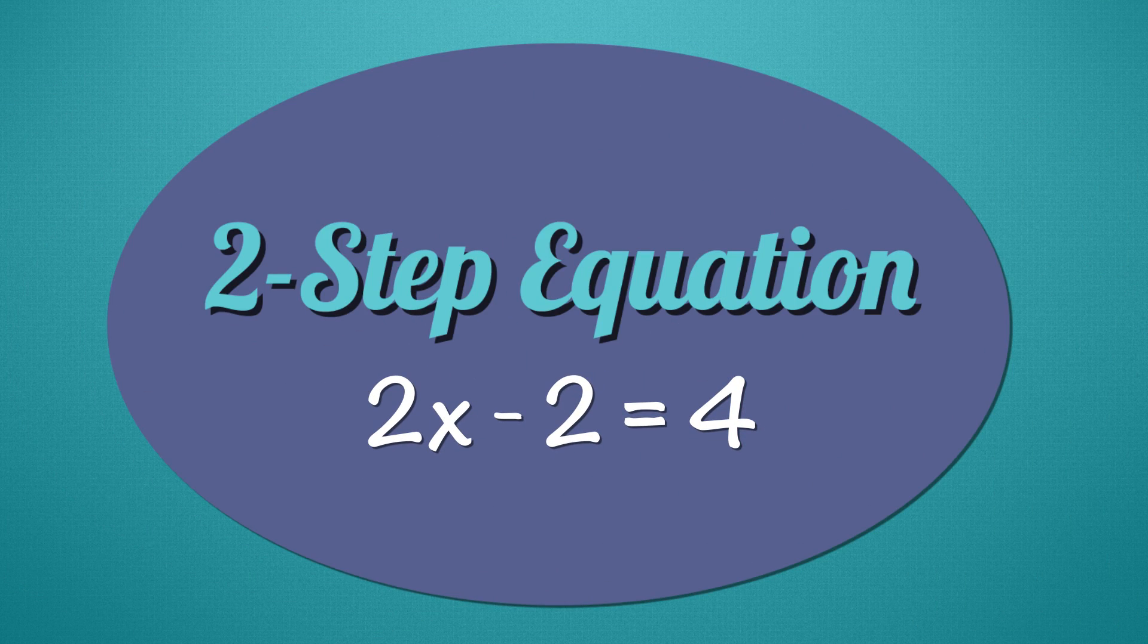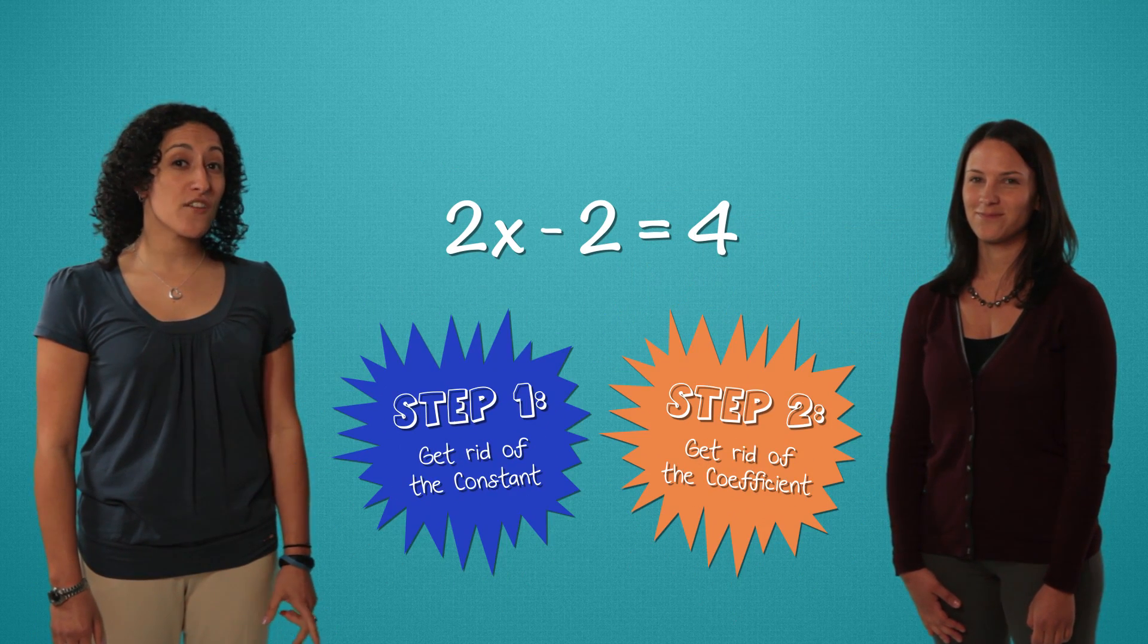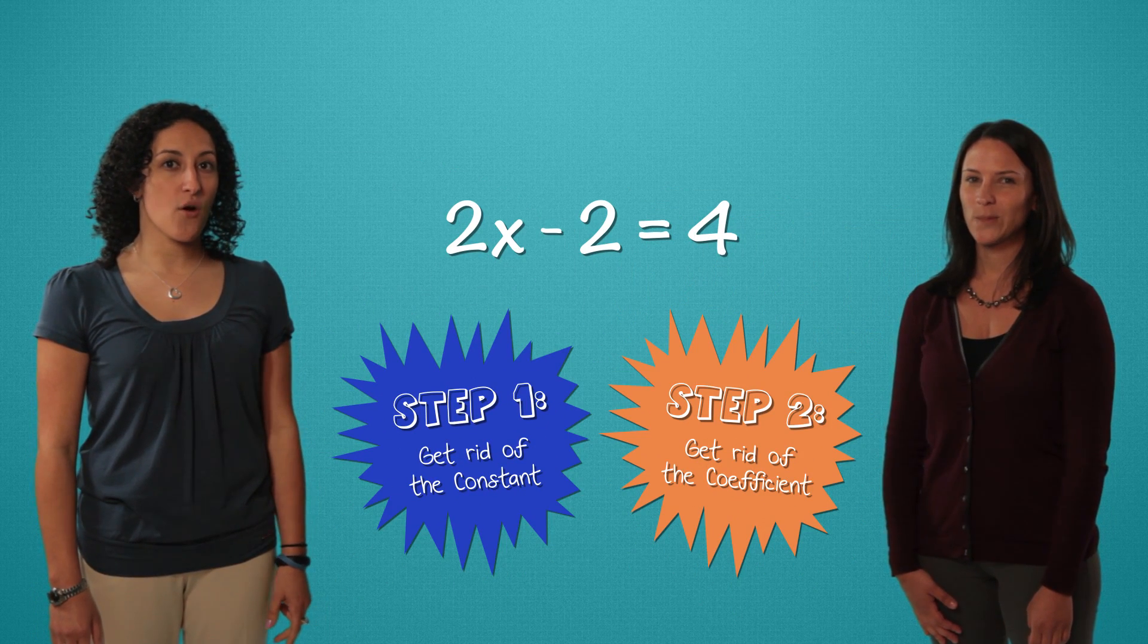We're back to a two-step equation. Code VOBS has been neutralized. Now we're back to basics. Get rid of the lonely number, then get rid of the coefficient.